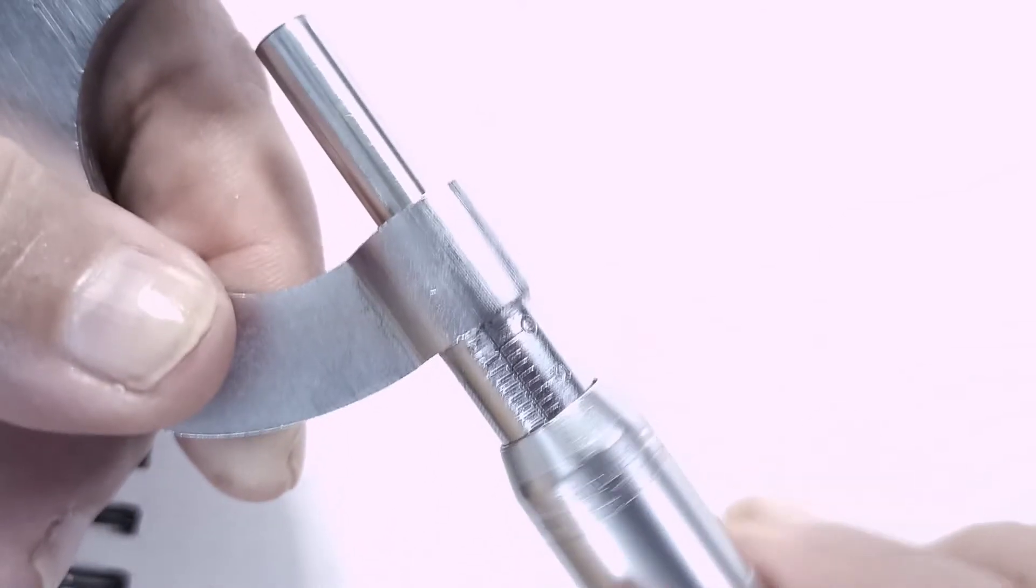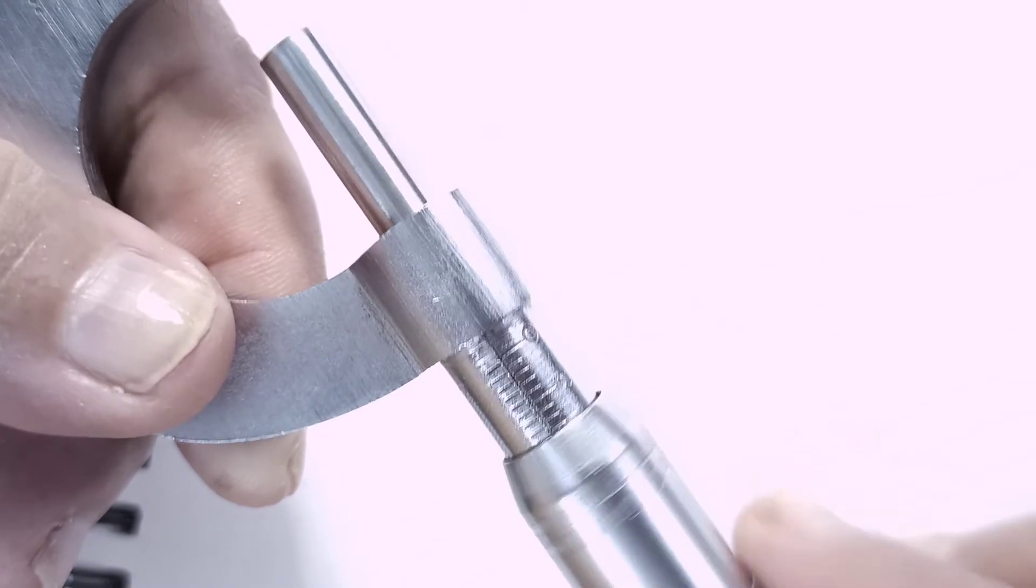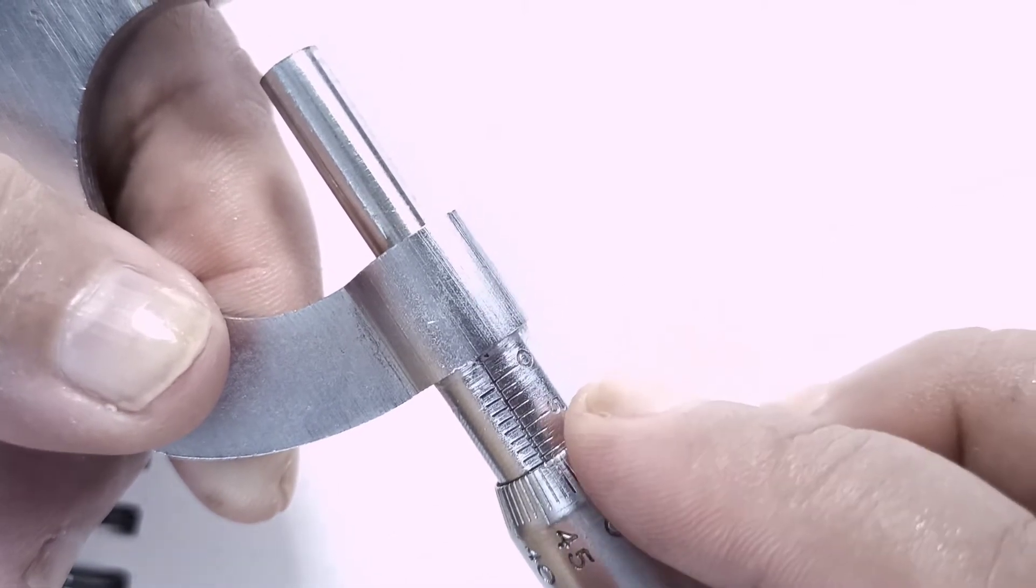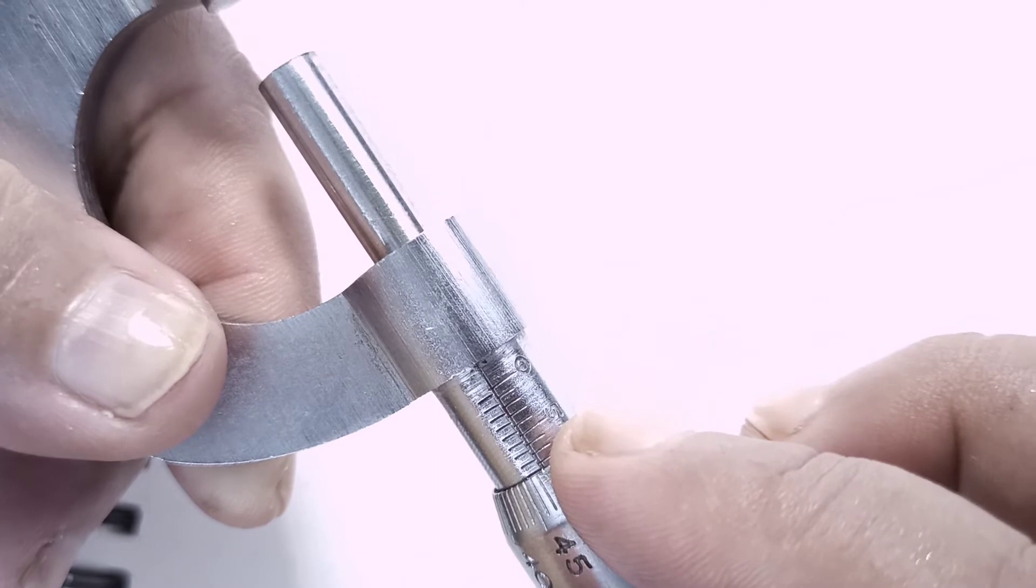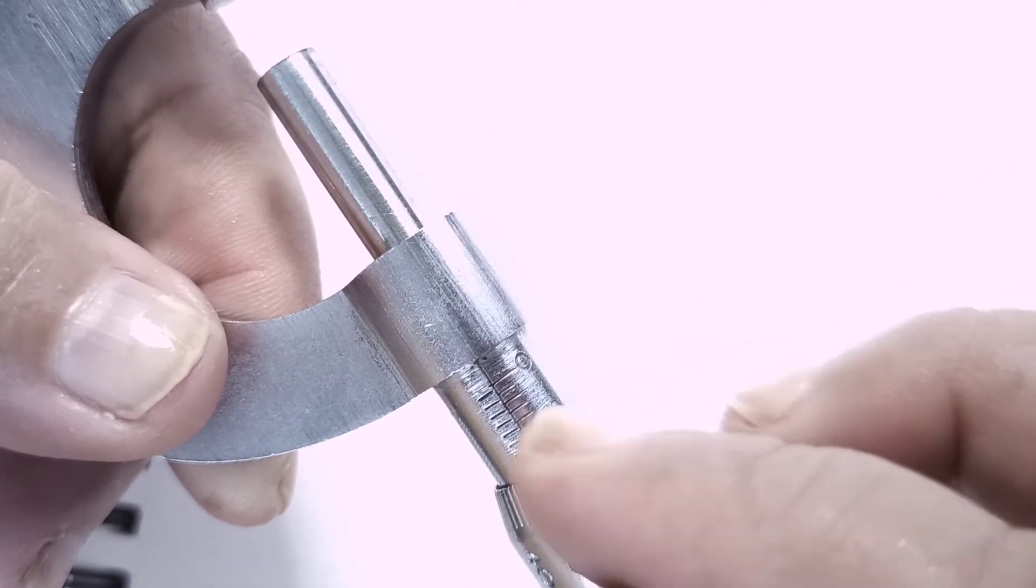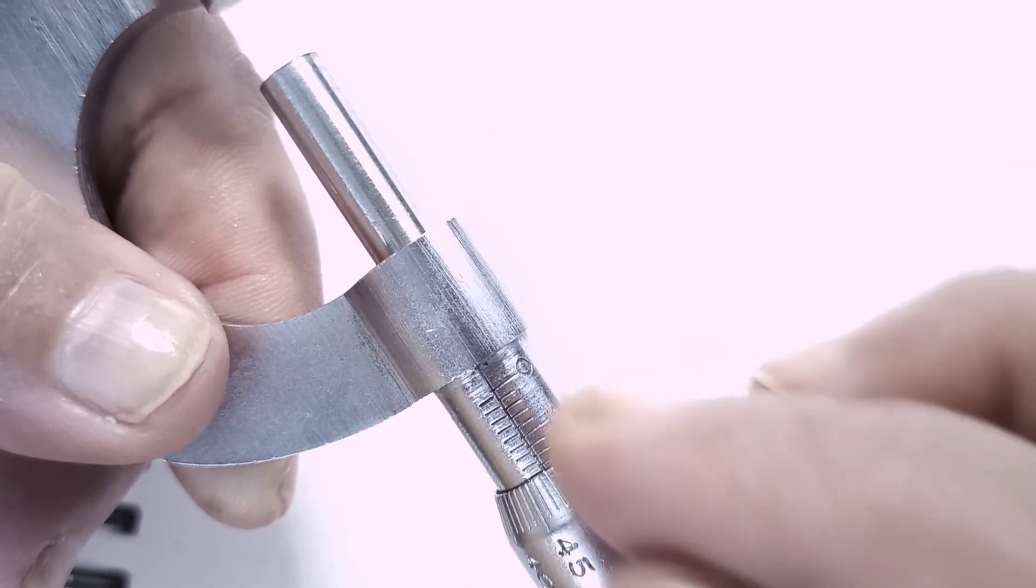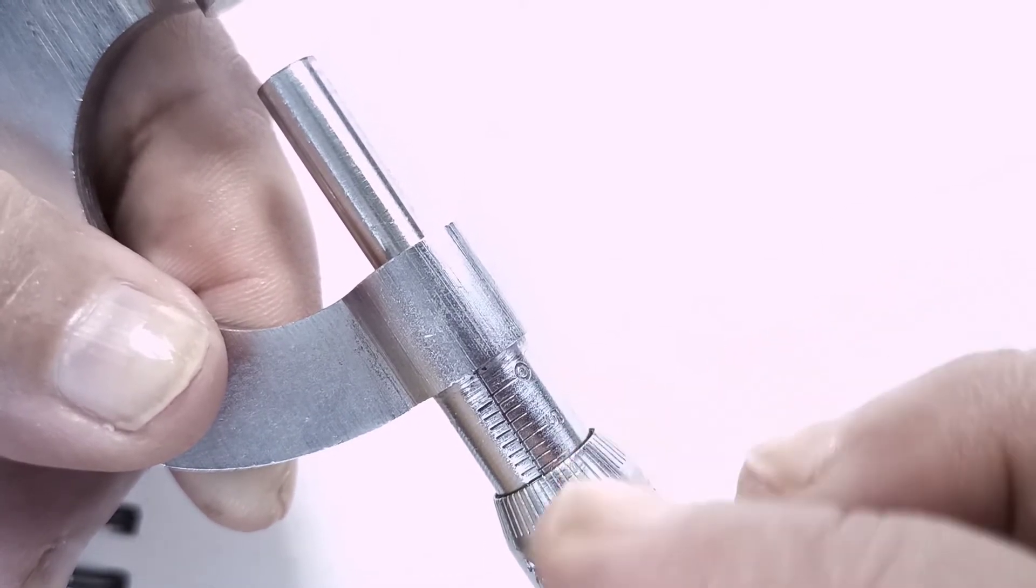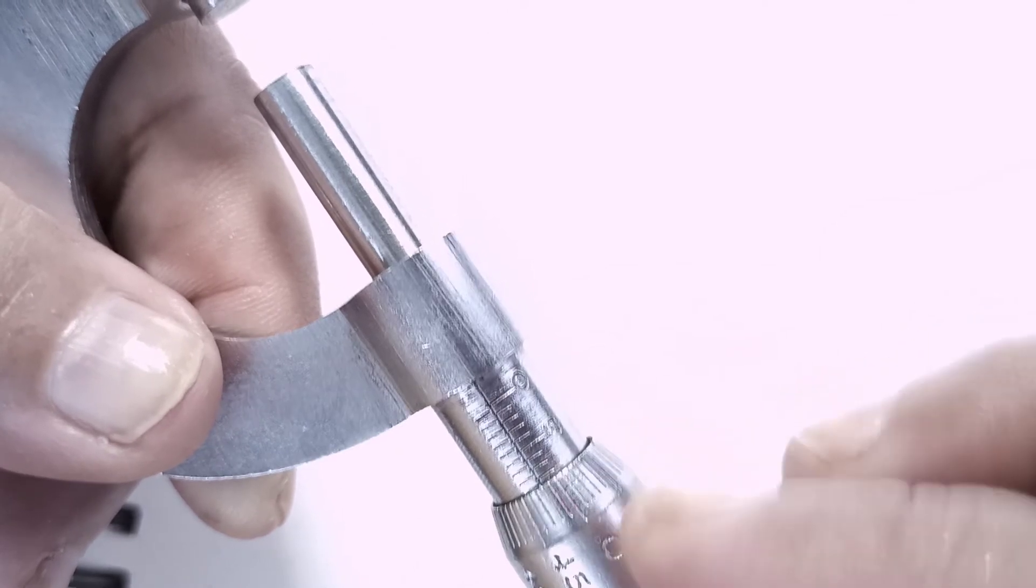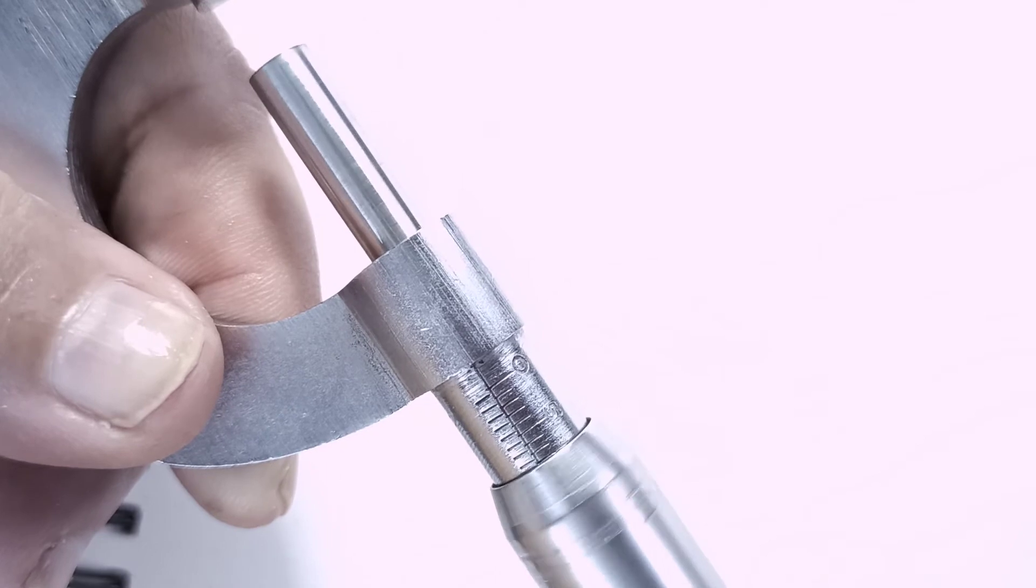If you rotate it in reverse direction then this will be stuck in the nut. So we call this backlash error. We suggest that we need to rotate the screw in one direction.